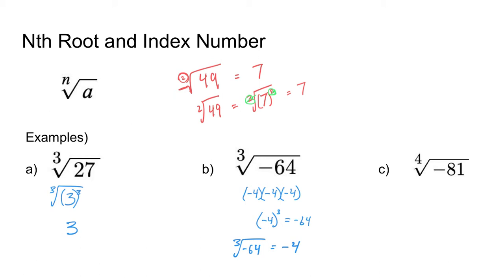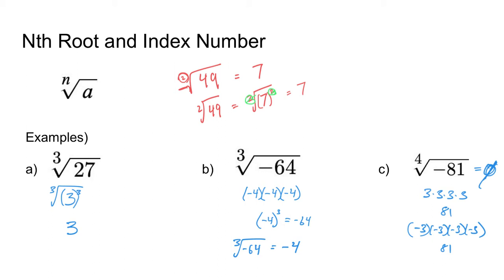What about the fourth root of negative 81? I know 3 times 3 times 3 times 3 — that's really like 9 times 9 — gives me 81. So maybe the answer is negative 3. But check it out: negative 3 to the fourth power gives me positive 81. I don't know of any way to get negative 81 for this answer. So this is, in fact, no solution — that little zero with a line through it. We can't take the fourth root of negative 81. This is like imaginary numbers with square roots, but with fourth roots we don't have to worry about imaginary numbers.